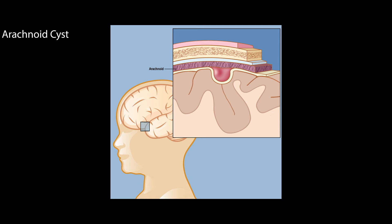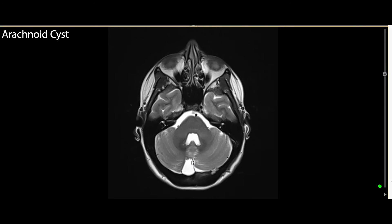The arachnoid space is where this fluid accumulation occurs, and it's usually congenital, meaning it occurs since childhood. It is often benign, meaning it is of no consequence.